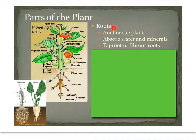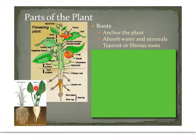Roots also absorb water and minerals — water going into the roots and absorbing the minerals there. And they come in two different forms: tap roots or fibrous roots. A tap root would be like one big main central root, versus fibrous roots, which have lots and lots of little fibers going out everywhere.